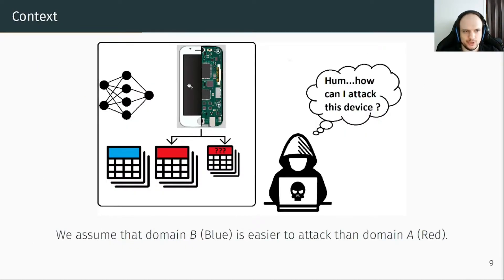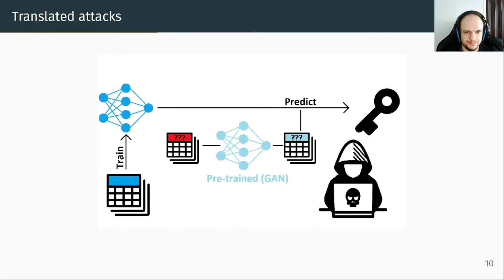We have a device to target from which we extract a profiling set and an attack set. We also have another dataset. We assume that domain B, described in blue, is easier to attack than domain A, described in red. We investigated two additional approaches. The first is the translate attack: the attacker uses the dataset from domain B to pretrain a network, and uses a GAN which learns to translate traces from domain A to domain B. After training, the attacker uses the translated traces and the pretrained network to guess the key.